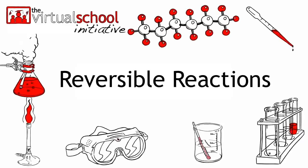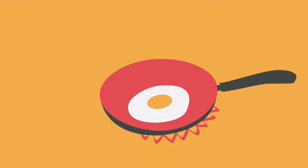In this lesson, we will learn about reversible reactions. When we fry an egg, it is impossible to unfry it. A lot of reactions work in the same way. Once it is done, it is irreversible.